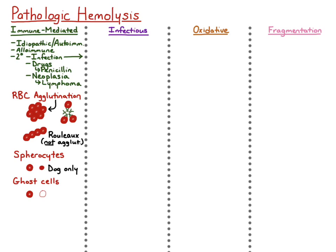Those are the things we look for on a blood smear. Grossly, on physical exam, you would look for signs of increased bilirubin in the blood and tissues — icterus in the tissues, hyperbilirubinemia on a chemistry panel, and bilirubinuria in the urine. We also look for signs of intravascular hemolysis, where red blood cells release hemoglobin into the plasma. We can see hemolysis in the plasma, and if hemoglobin spills into the urine, we look for red urine or hemoglobinuria.